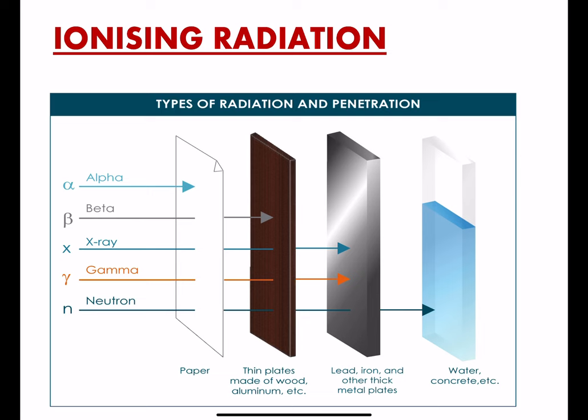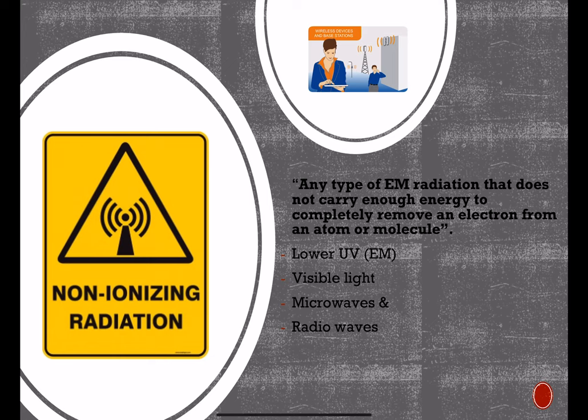Non-ionizing radiation is any type of electromagnetic radiation that does not carry enough energy to completely remove an electron from an atom or molecule. Instead of producing charged ions when passing through matter, the electromagnetic radiation has sufficient energy only for excitation — the movement of an electron to a higher energy state.